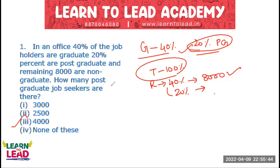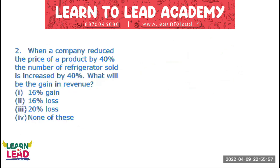This is our basic concept — we can know it in 5 to 10 seconds and then answer. That is your entrance exam shortcut. Next question: When a company reduces the price of a product by 40%,